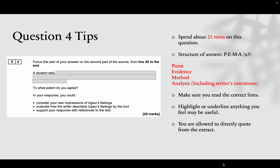Question four is the last one based on the extract. You should spend about 21 minutes on it. The structure is PIMA — Point, Evidence, Method, and Analysis — and you want to write four PIMAs, not three. Your method can be a language device, a structural device, or anything else the writer has used to create an impact or effect. You're going to get a statement and you have to agree or disagree. It's 20 marks — remember PIMA times four, not times three, that's the common mistake. Again, include writer's intentions.